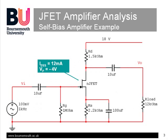This is the circuit example we'll analyze. The JFET parameters are the Saturation Drain Current, IDSS, which is 12 mA in this case, and the Pinch Off Voltage, VP, which is minus 4 volts.